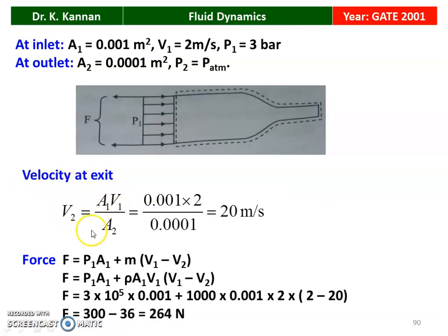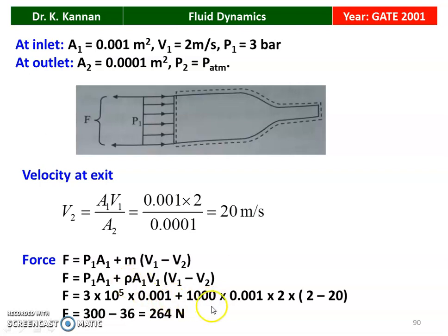First, calculate the exit velocity using the continuity equation: V2 = A1·V1/A2 = 0.001×2/0.0001 = 20 m/s. Force: F = P1·A1 + ṁ·(V1 − V2), where ṁ = ρ·A1·V1. Substituting: F = 3×10⁵×0.001 + 1000×0.001×2×(2−20) = 300 − 36 = 264 Newton. The force required to keep the nozzle in place is 264 N.